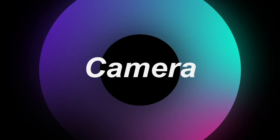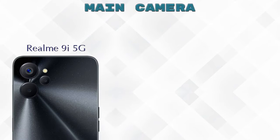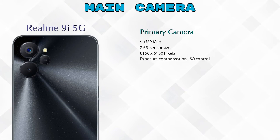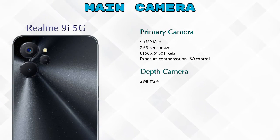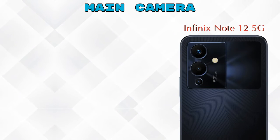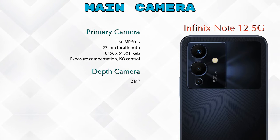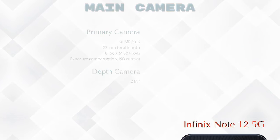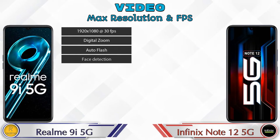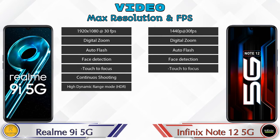Now let's see the details about our favorite feature — the camera. The 9i 5G has three rear cameras: a primary camera, a depth camera, and a macro camera. The Note 12 5G has two rear cameras: a primary camera and a depth camera. For video, both phones offer seven different types of features.